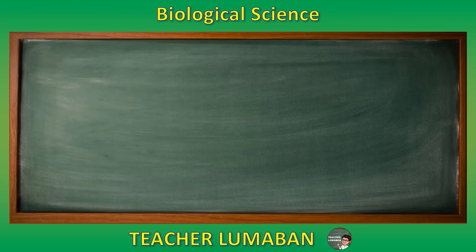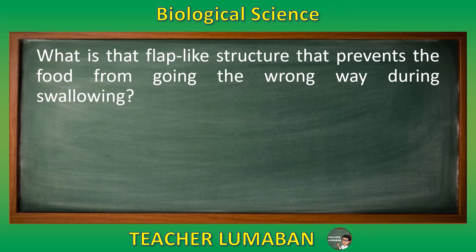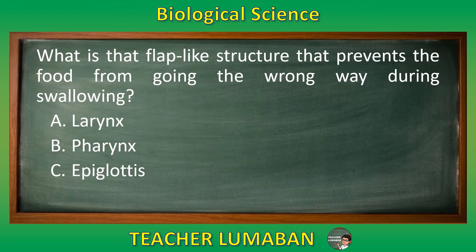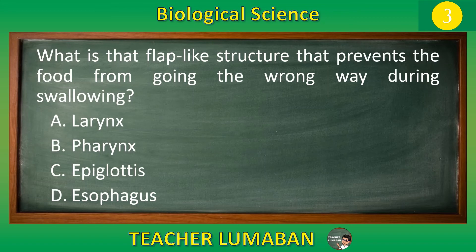What is the flap-like structure that prevents the food from going the wrong way during swallowing? Letter A: larynx. Letter B: pharynx. Letter C: epiglottis. Letter D: esophagus. The correct answer is letter C, epiglottis. The flap-like structure that prevents food from going the wrong way during swallowing is called the epiglottis.